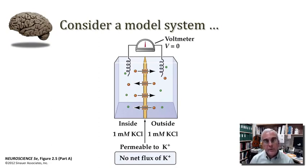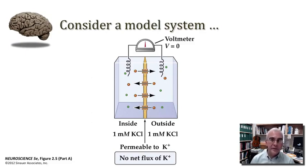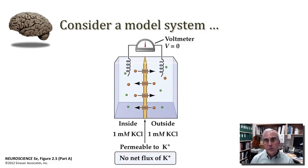If we were to insert wires into either side of this chamber and record an electrical potential, we'd see that there is essentially no potential difference — the voltmeter would record a potential of zero.